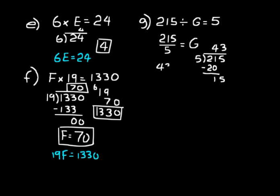We can check our work. 43 times 5 should equal 215. 3 times 5 is 15. Carry a 1 up here. 4 times 5 is 20, plus 1 is 21. So 43, say 43 equals G. That is the correct answer.